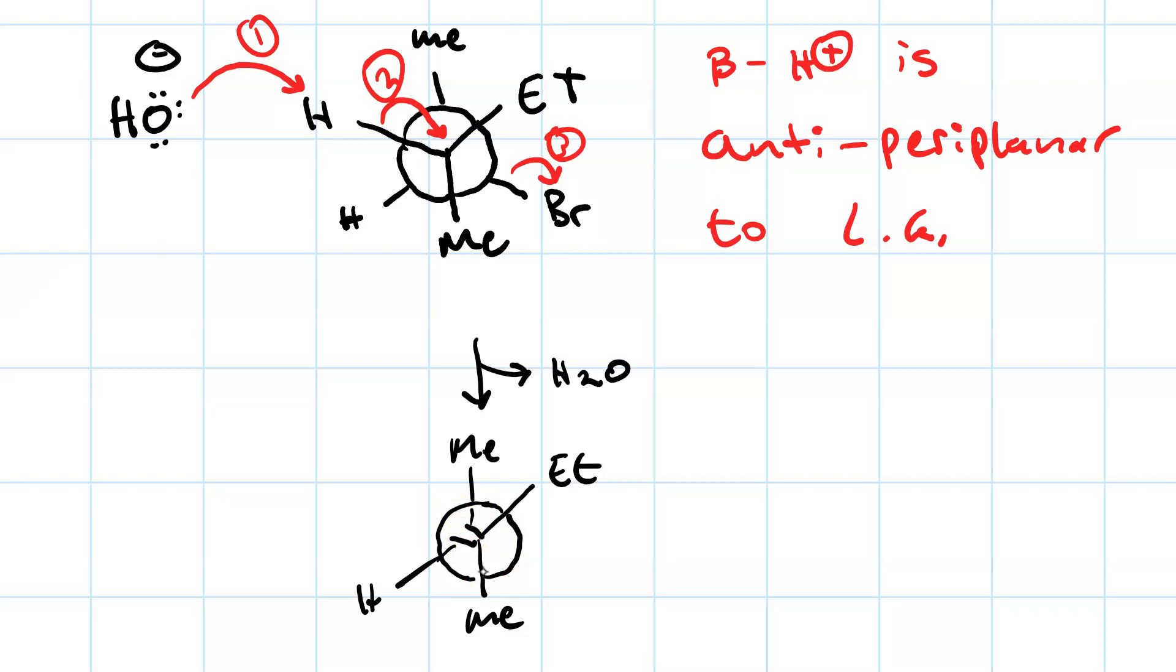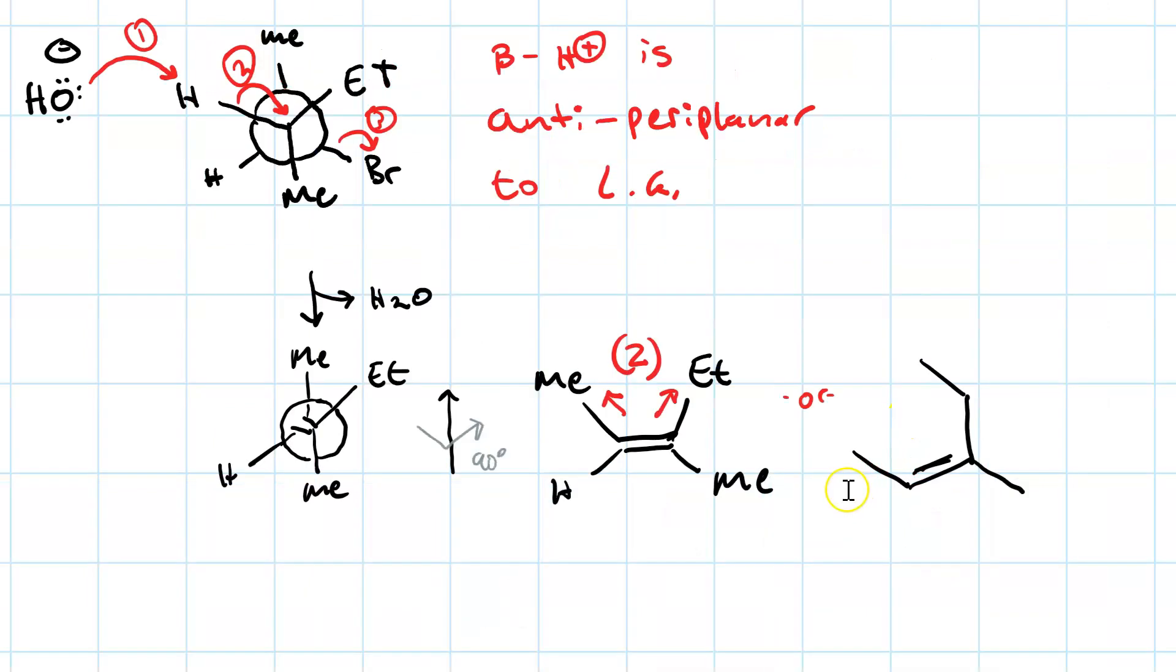So here's the Newman projection of our product showing the double bond. And if we rotate that 90 degrees around the vertical axis, we now have this Newman projection. So we can see, we get the Z isomer, we do not get the E isomer. So here's my methyl group to the left of the double bond. Here's my methyl group to the right of the double bond.